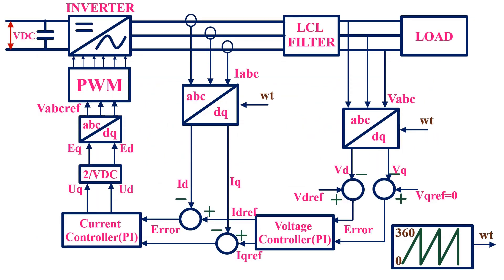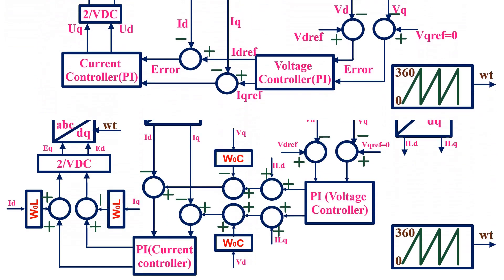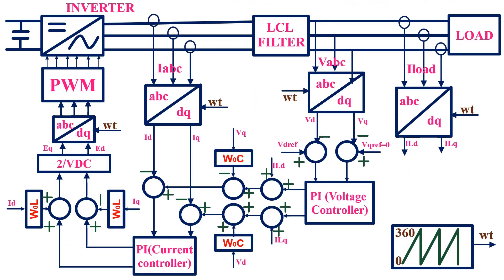This is the controller that I explained in my previous video. This one works only for balanced load conditions. Now we need to modify this controller so that the inverter will work for unbalanced load conditions as well. This is the modified controller for unbalanced load condition. There are quite a lot of changes that I have made to make it work for unbalanced load.